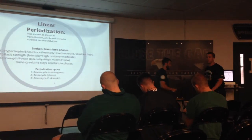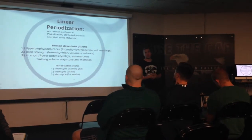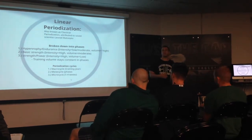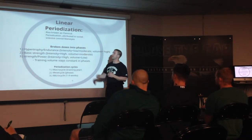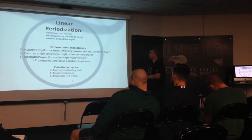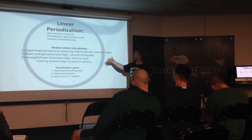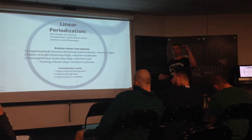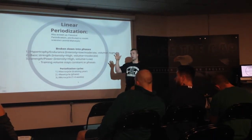Linear periodization, also known as classical periodization, was created around the 1960s with Leo Matviev. It's broken down into phases: hypertrophy, endurance, basic strength, strength, and power. Intensity is low in hypertrophy but volume is high. As you progress through these phases, volume starts to decrease and intensity starts to increase. For periodization cycles: the macrocycle depends on how long the off-season is — it can be a year, or for football it can be three to four months before spring ball.